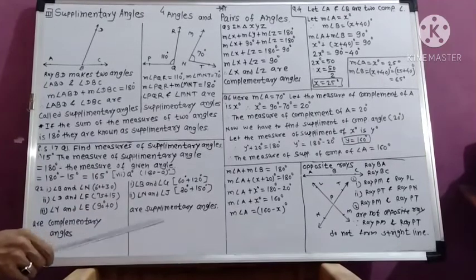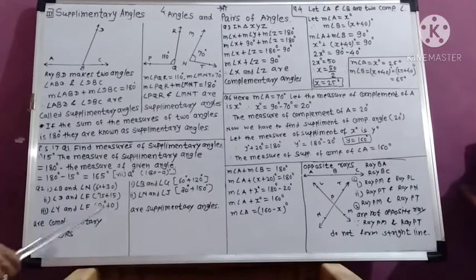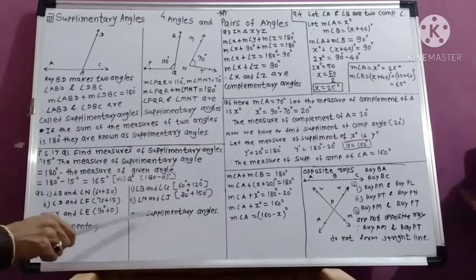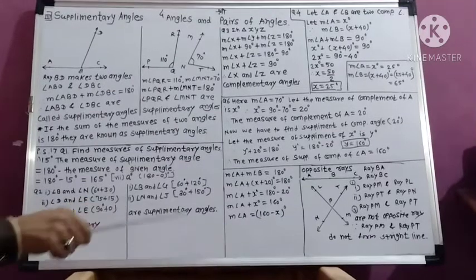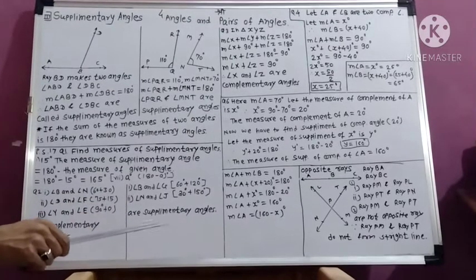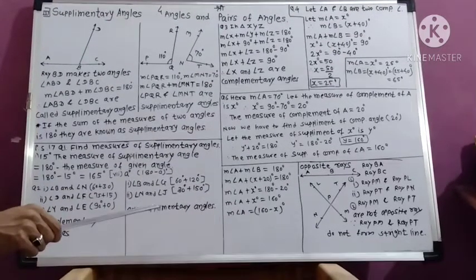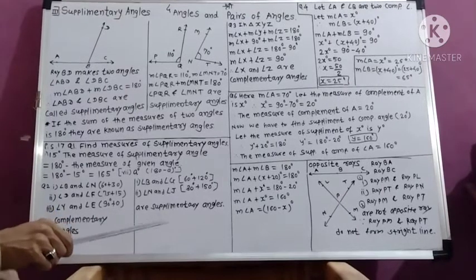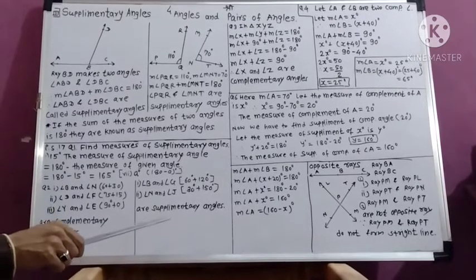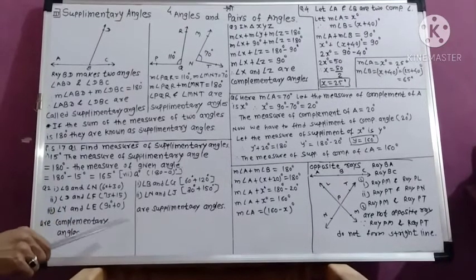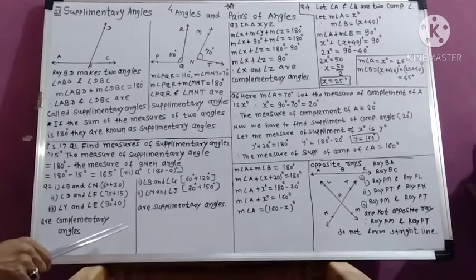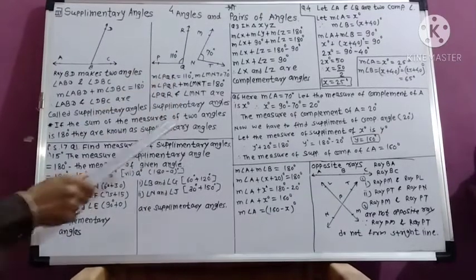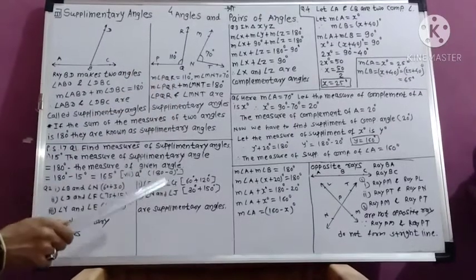In this way, we can identify pairs of complementary and supplementary angles by using the measure or rule given in the example. Now we turn to question 3.